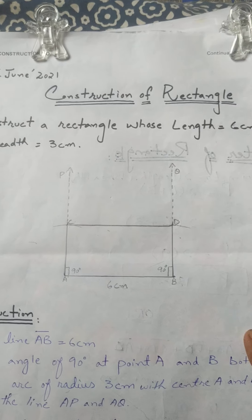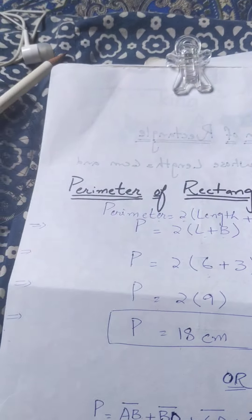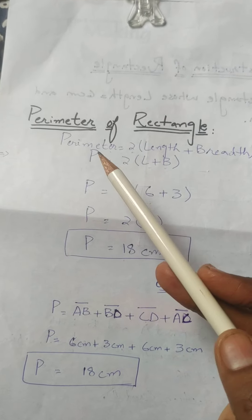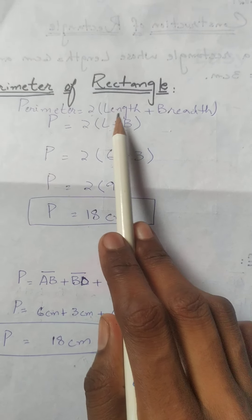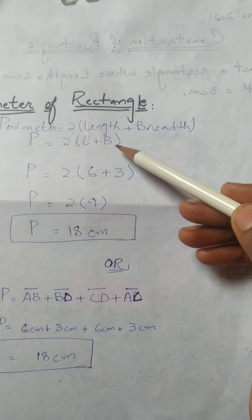After constructing it, we are going to find the perimeter of this rectangle. The formula to find the perimeter of a rectangle is P = 2(L + B), where L is length and B is breadth.